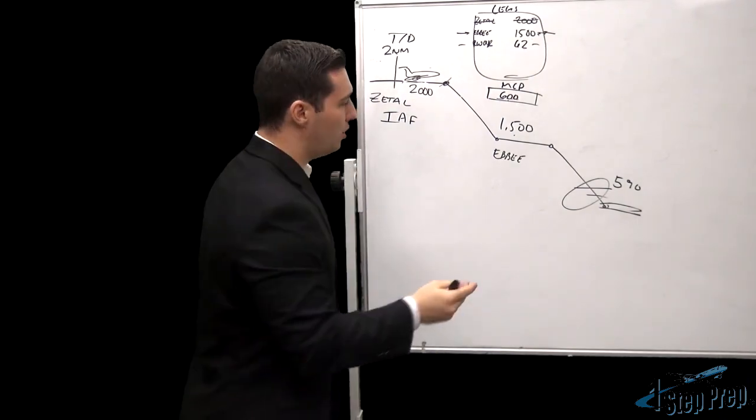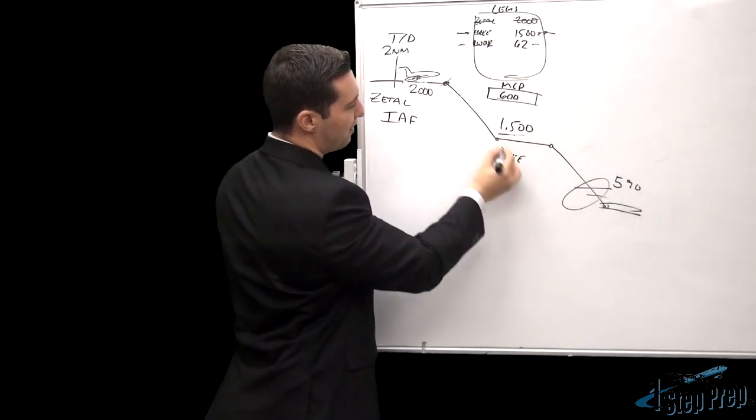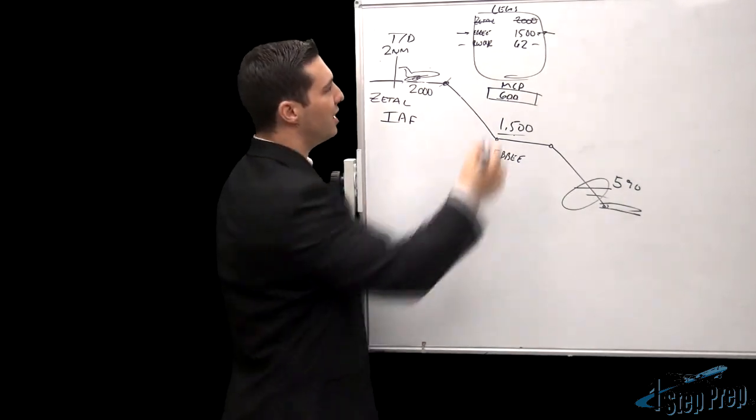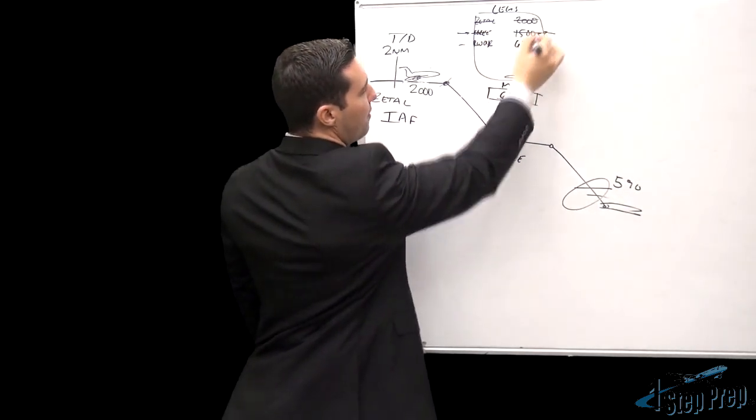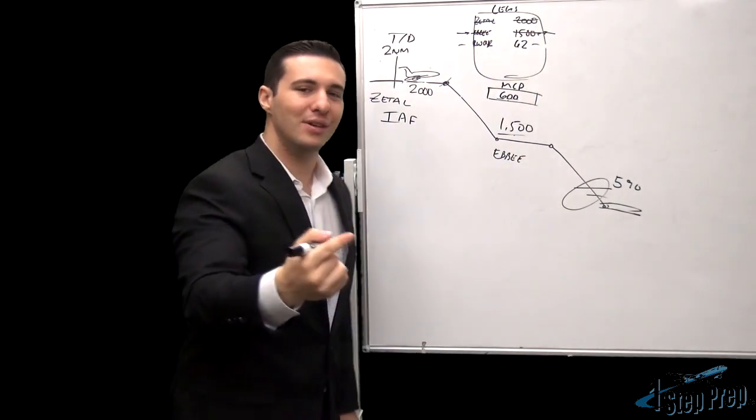Now, the higher of the two happens to be EBI at 1,500. The aircraft will descend and upon reaching EBI at 1,500 feet, it will repeat the same procedure yet again.